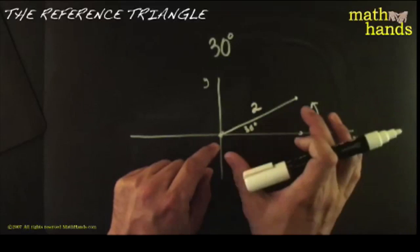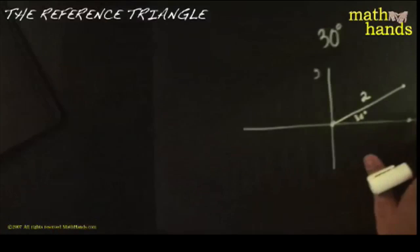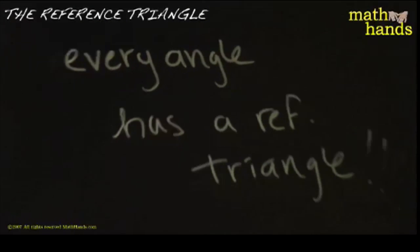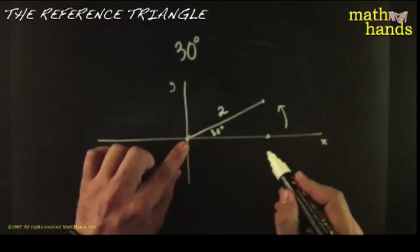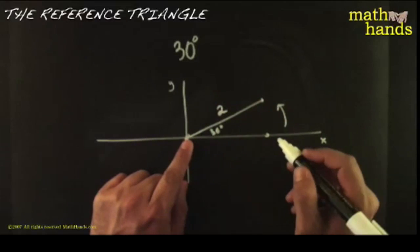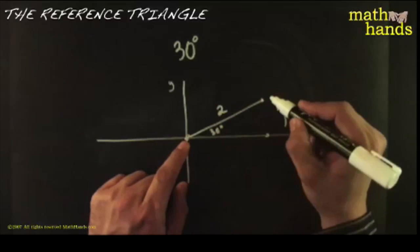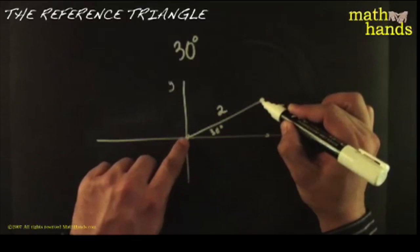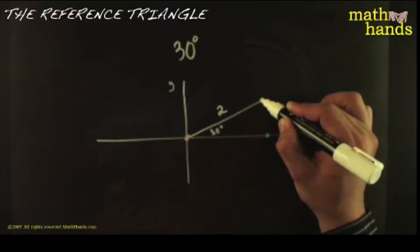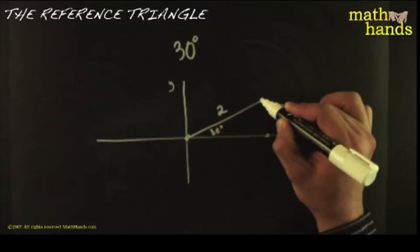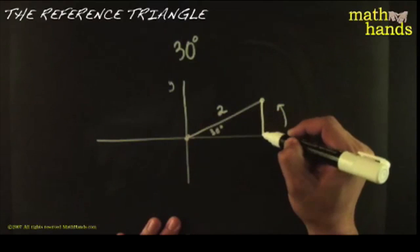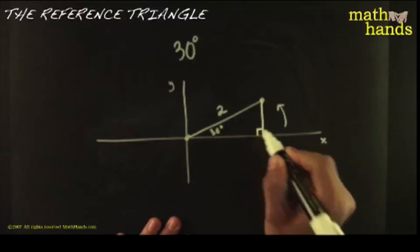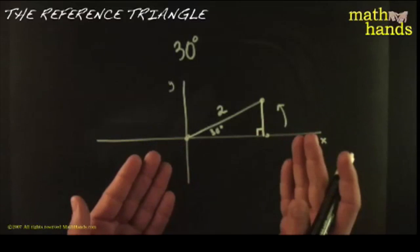This is called the angle in standard position. Keep in mind what's the name of the game today: every angle has a reference triangle. So I'm trying to draw the reference triangle for thirty degrees. You start on the positive x-axis, you go counterclockwise for positive angles, and you pick a segment of any length. Then once you're done drawing the segment, you keep one end on the origin and from the other end you draw a perpendicular towards the x-axis. That right there is the reference triangle for thirty degrees.